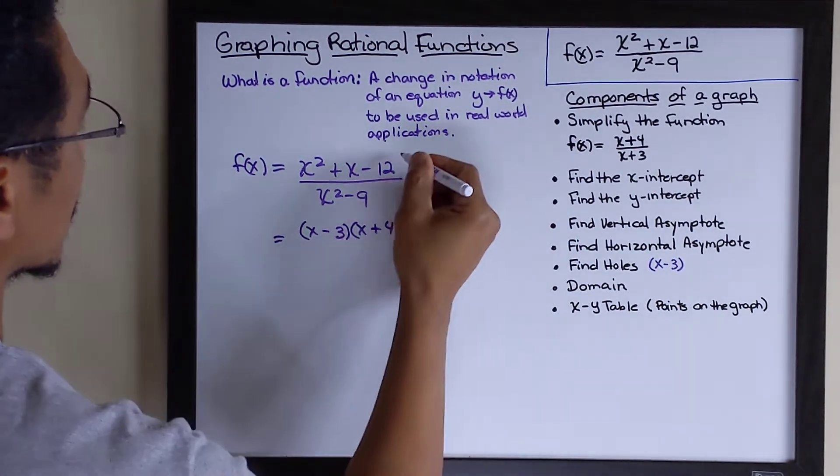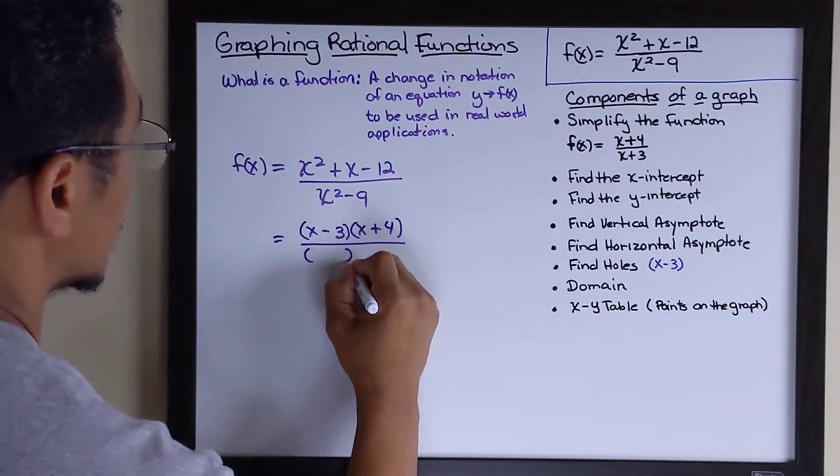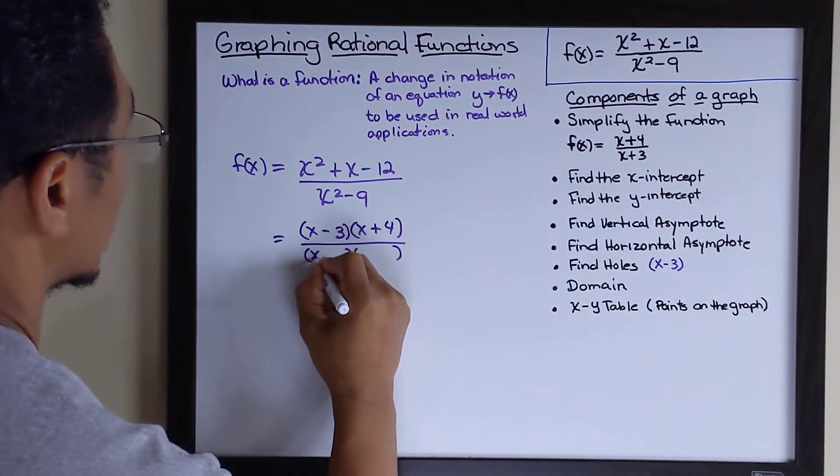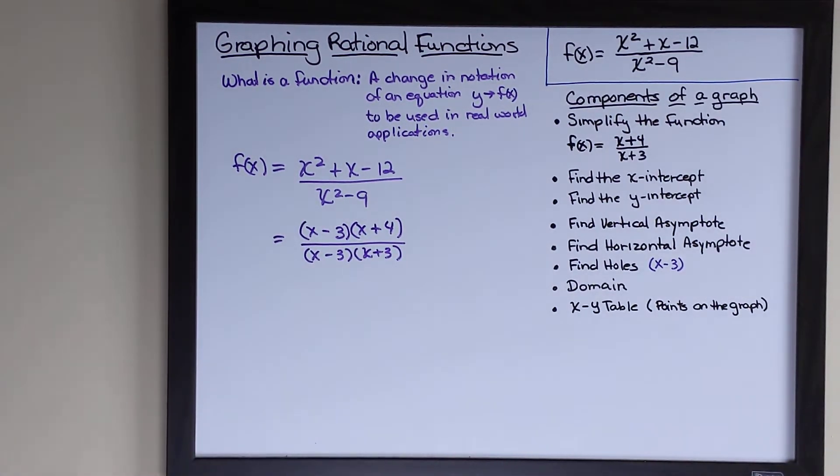Okay? We're going to factor the numerator using a is equal to one factoring. We're going to factor the denominator. We're going to use difference of squares factoring for that. And this is what we get.